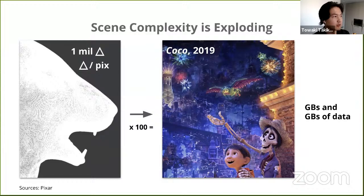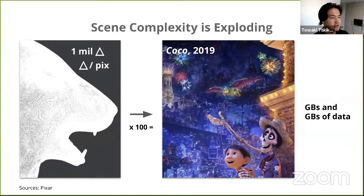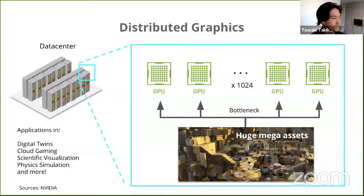What this means is that scene complexity is exploding. In the future, we might have million-triangle meshes, and for a scene like a Pixar Coco movie, you might have hundreds of super high-fidelity meshes — ending up with gigabytes of data that you have to manage, stream, and communicate to different clients. This is a huge problem for distributed graphics workloads, where the bottleneck is no longer the rendering algorithm but the streaming, communication, and synchronization of these mega assets between GPUs. Applications include digital twins, cloud gaming, scientific visualization, and physics simulation.